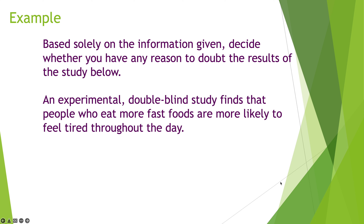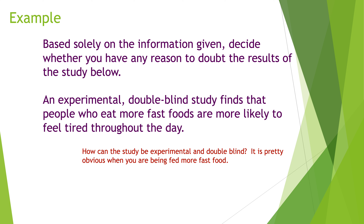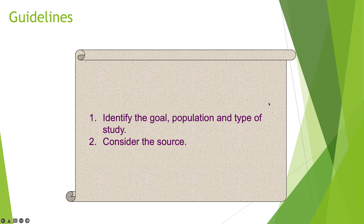Based solely on the information given, decide whether you have reason to doubt the results: an experimental double-blind study finds that people who eat more fast foods are more likely to feel tired throughout the day. The question is: how can a study be both experimental and double-blind here? If it's experimental and people are being fed more fast food, it's pretty obvious which group you're in. You'd know whether you're eating fast food or not, so it can't truly be double-blind. That's pretty fishy.